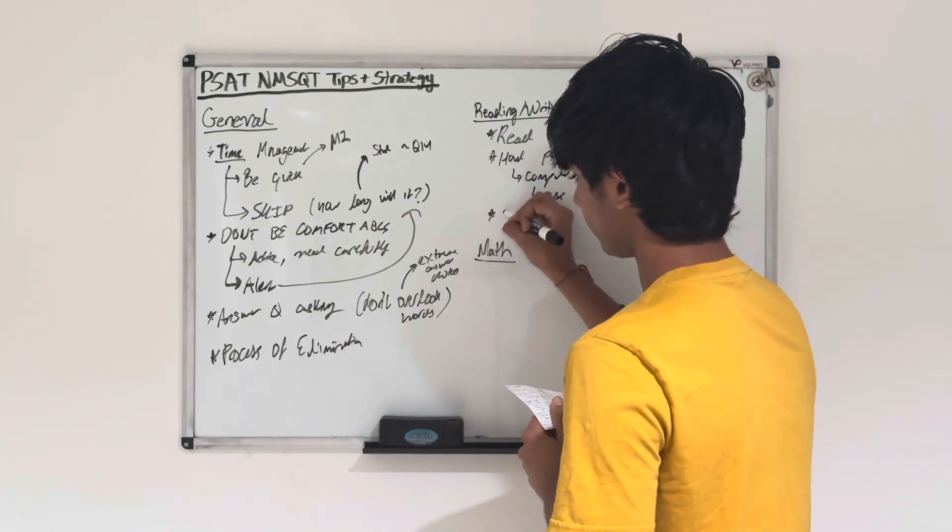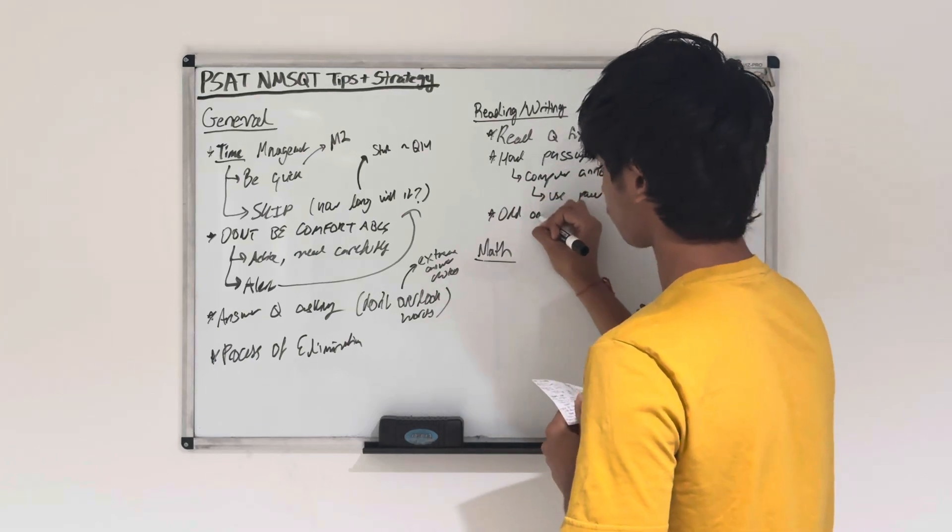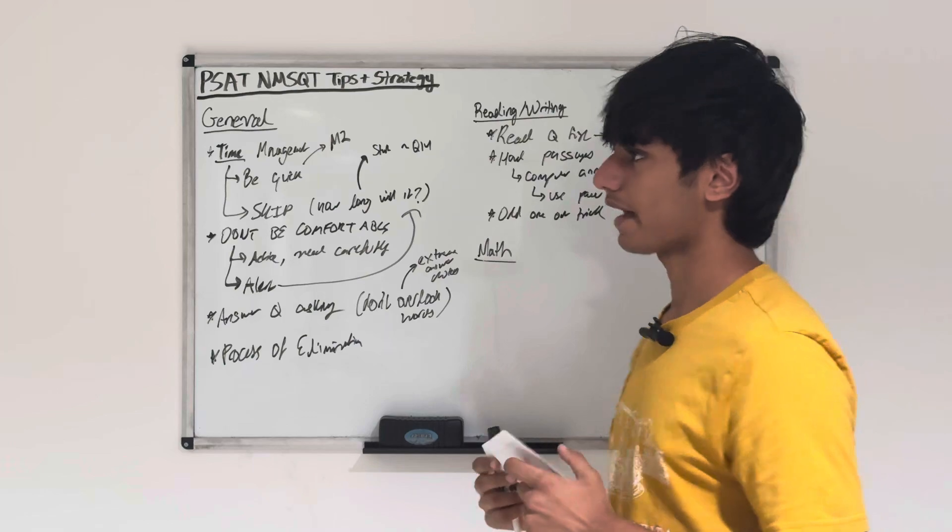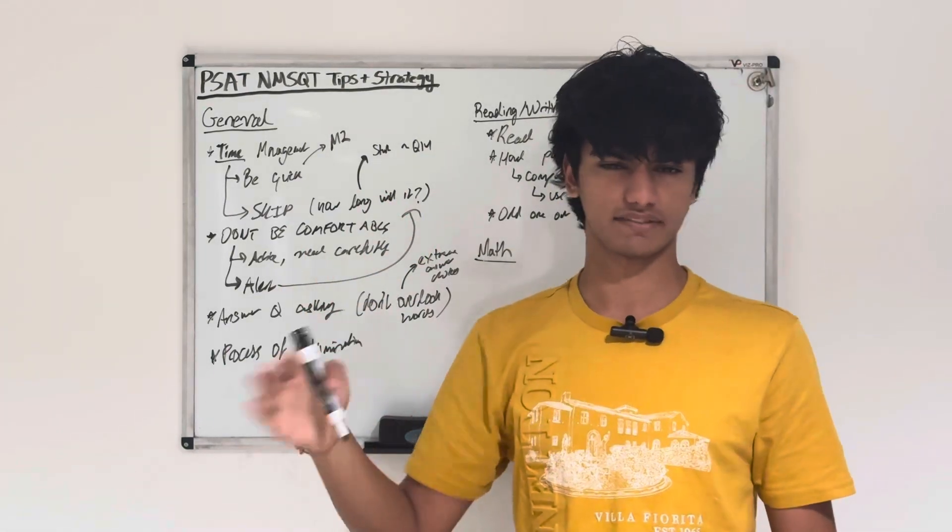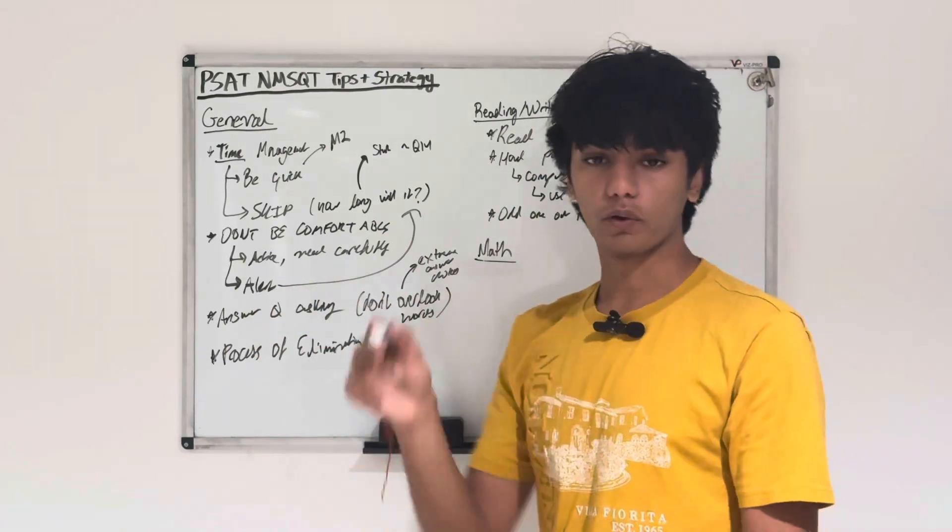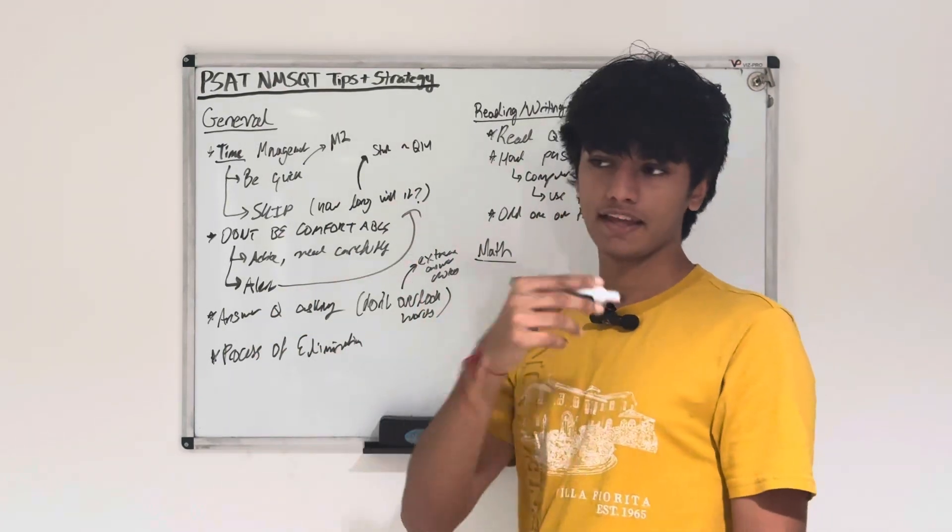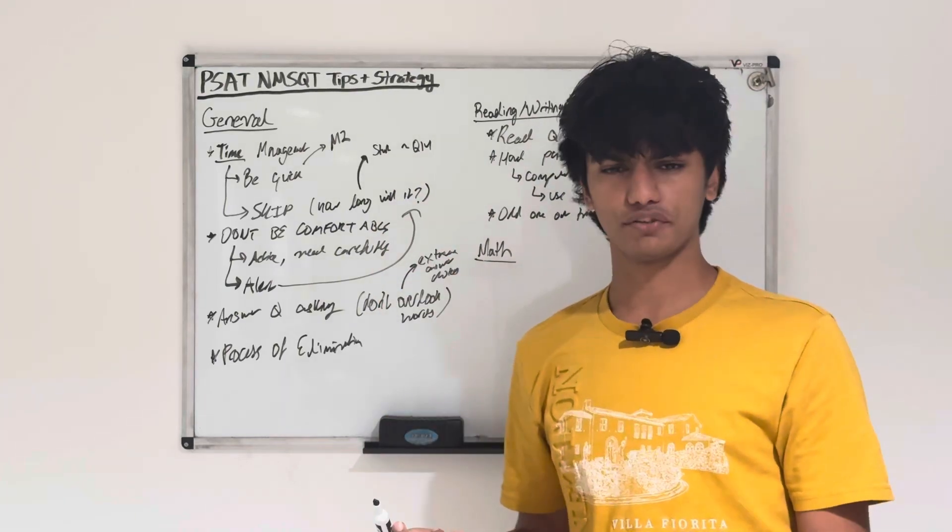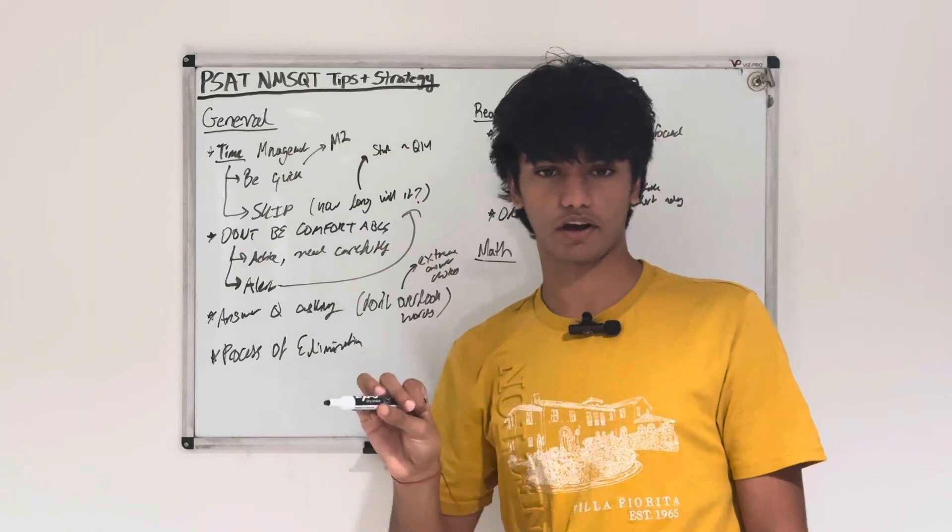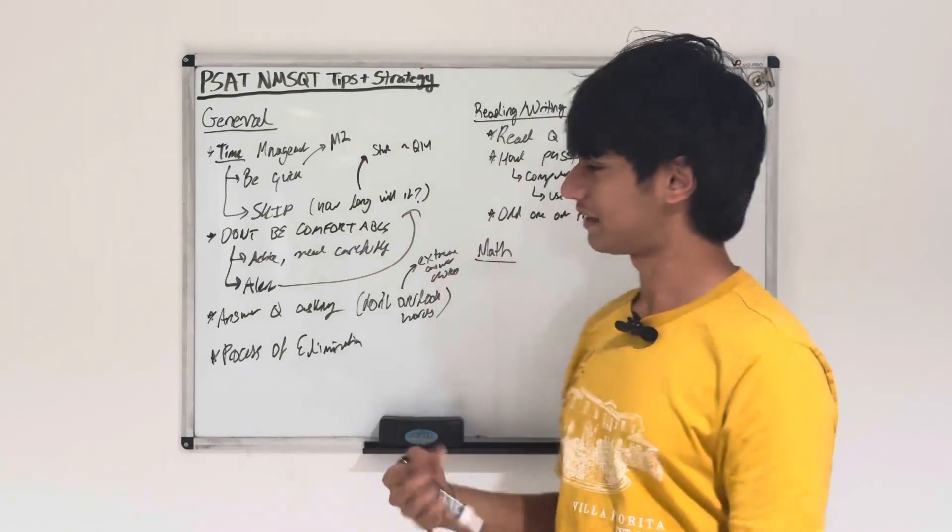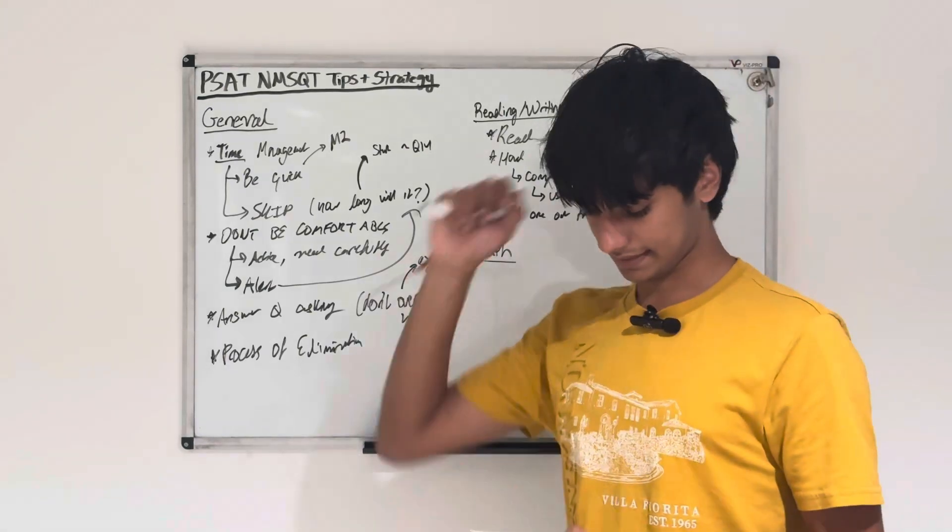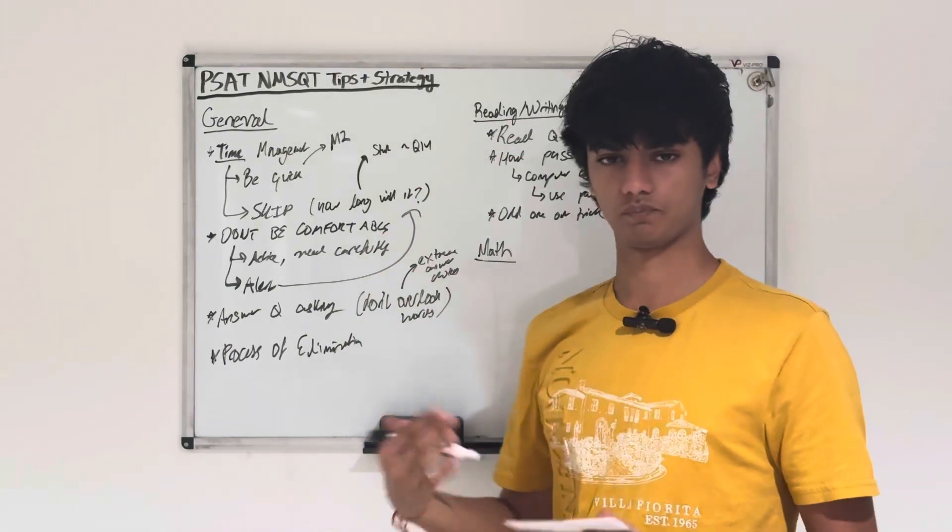And another trick is called the odd one out trick. This works more on the writing passages. Basically how the trick works is if you have three answer choices that are all the same in tense or the same plurality, for example, like a verb question, if they're all the same and there's one odd one out, chances are that the odd one out is going to be correct. The reason why is because you can't have three answer choices that are basically the same category, and the other one's odd one out. The odd one out is going to be correct because you only have one answer choice per question. But don't rely on this strategy. You rely on knowing the rules and the content.